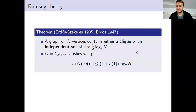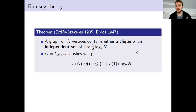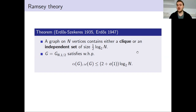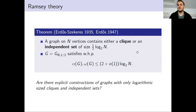Erdős's argument was pretty groundbreaking because he said: I cannot come up with an explicit construction, so let's just look at a random graph — throw each edge randomly independently with probability one half. Then he showed that with high probability, this graph indeed has only logarithmic size cliques and independent sets. This probabilistic argument started a new chapter in combinatorics involving the probabilistic method, but in the case of Ramsey theory it raised a very natural question: can we find explicit constructions of graphs with similarly good Ramsey properties?